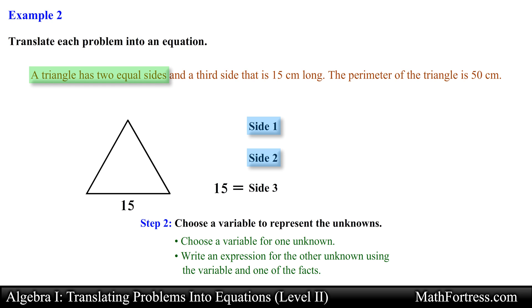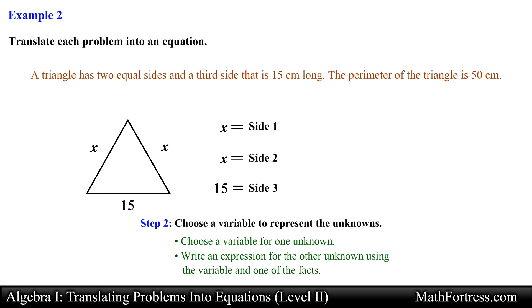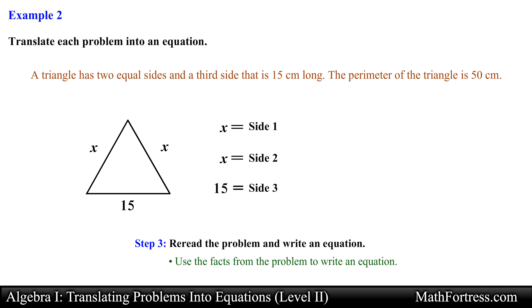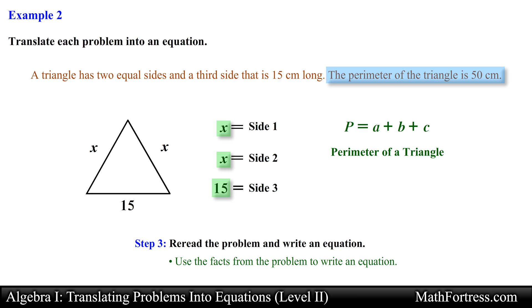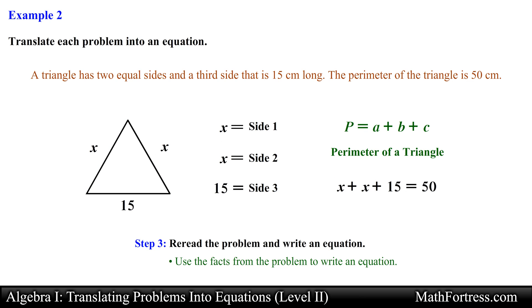From the first sentence we are told this triangle has two equal sides, so we are actually dealing with an isosceles triangle — a triangle that has two sides with the same measurement. This means we can assign the same variable to both sides since they are equivalent, so let's assign each side the variable x. Now it's just a matter of translating these expressions into an equation. The perimeter is equal to 50 centimeters, and using the formula for the perimeter of a triangle we add all the sides: x plus x plus 15 equals 50. And this is our final answer.